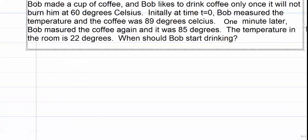This is dealing with coffee. The coffee is initially 89 degrees Celsius, and after one minute it's 85 degrees Celsius. We're given the ambient temperature of the room, and the question is when should Bob start drinking if he wants it to get to 60 degrees Celsius?